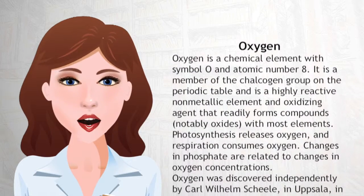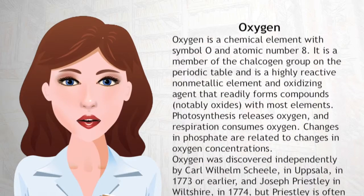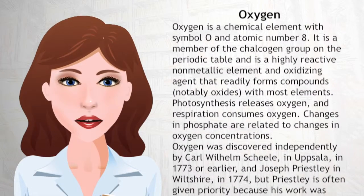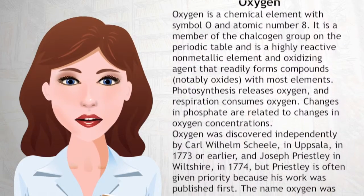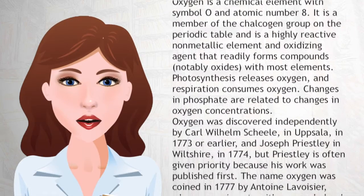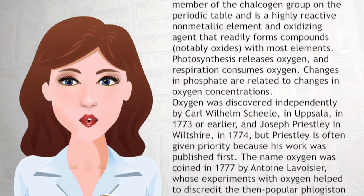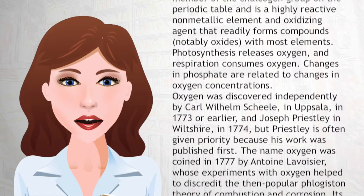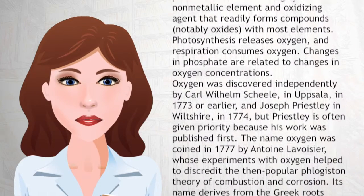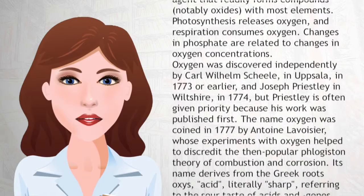Changes in phosphate are related to changes in oxygen concentrations. Oxygen was discovered independently by Carl Wilhelm Scheele in Uppsala in 1773, and Joseph Priestley in Wiltshire in 1774, but Priestley is often given priority because his work was published first.